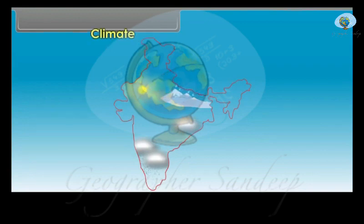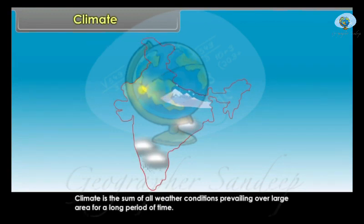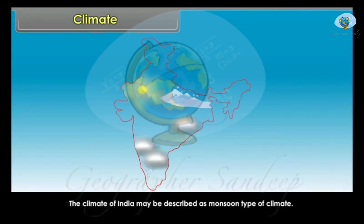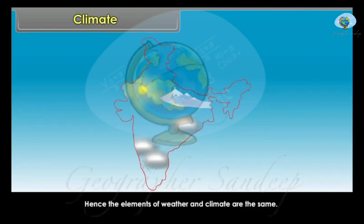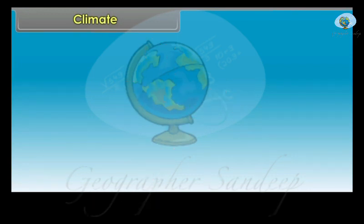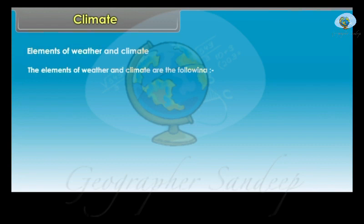Climate is the sum of all weather conditions prevailing over a large area for a long period of time. The climate of India may be described as monsoon type of climate. The climate stands for a generalized picture of the weather conditions of a given place. Hence, the elements of weather and climate are the same: temperature, pressure, wind direction, and humidity.